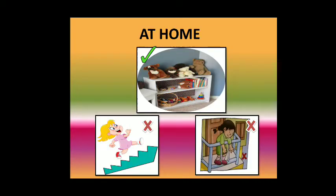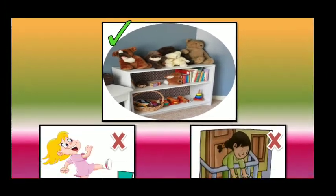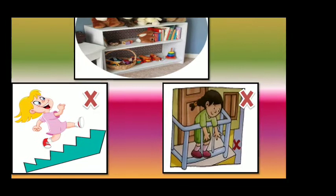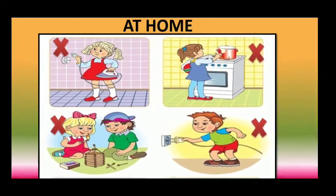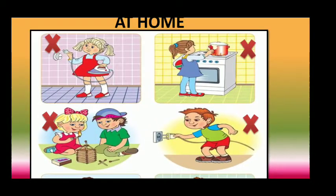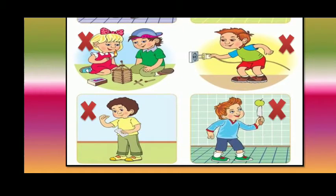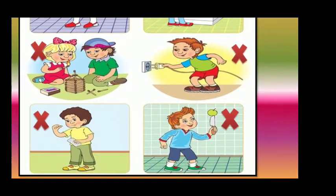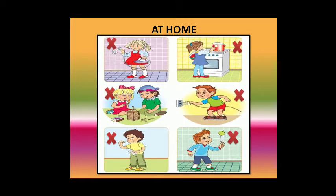There are some safety rules that we should follow at home. First, keep your things at a proper place. Do not play on the staircases. Do not lean from the balcony. Do not touch the electrical appliances. Do not touch the gas oven. Do not touch the matchsticks. Do not play with medicine. Do not play with sharp objects like scissors or a knife.